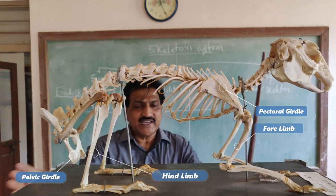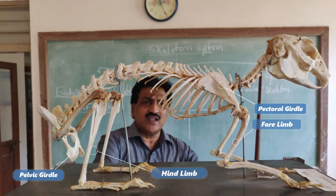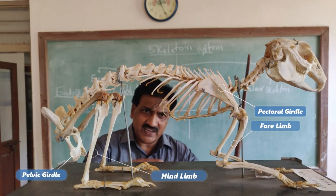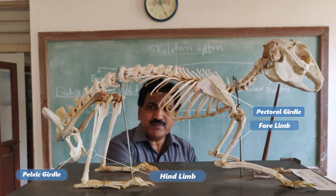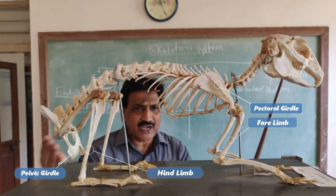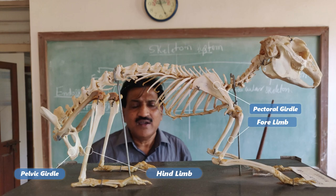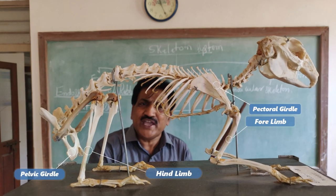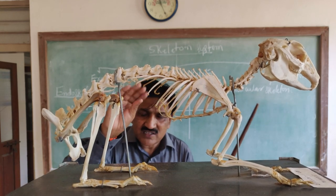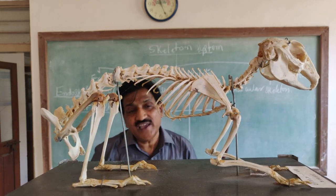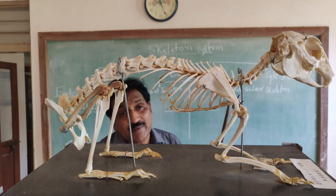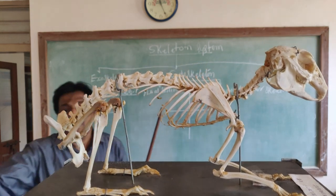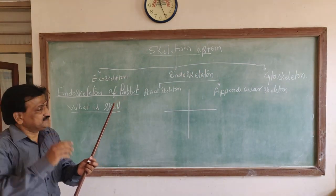The types of girdles are pectoral girdle and pelvic girdle. The limbs are forelimbs and hind limbs — that is why it is called tetrapoda. Each limb ends with five digits, called pentadactyl. So rabbit is tetrapoda and pentadactyl.